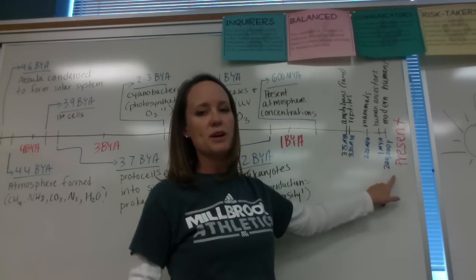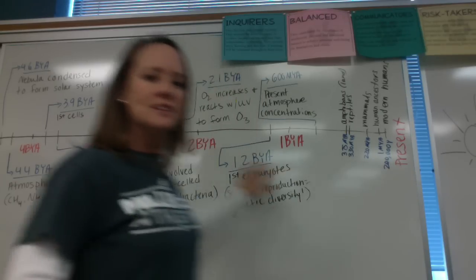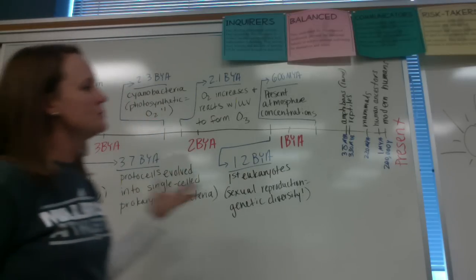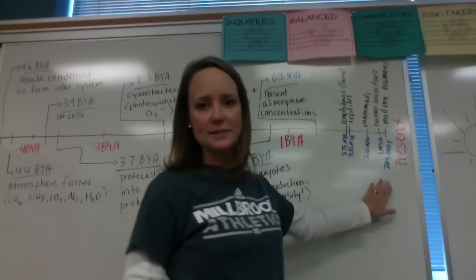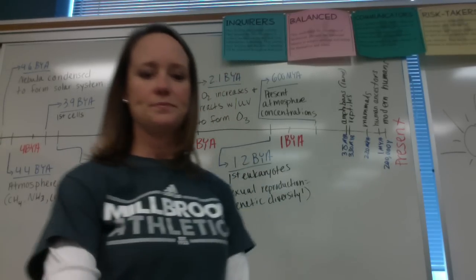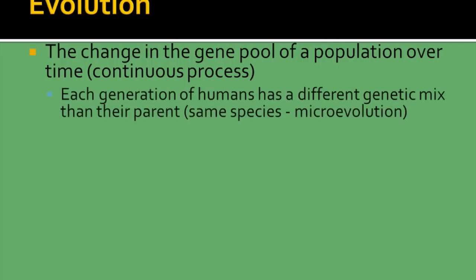And here we are at our present. So if we look at this as a 24-hour clock, humans have been here like a second. When we take a look at evolution, we're talking about the change in the gene pool of a population over a period of time. This is a continuous process — it's not something that just happens all at once.